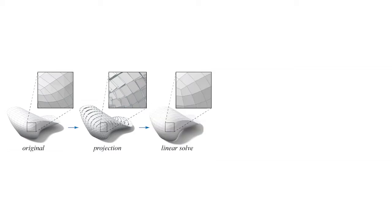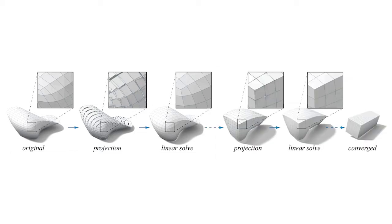The second step solves a linear system to find the placements of the vertices that best match these projections. These two steps are iterated until convergence.